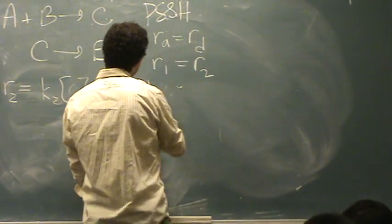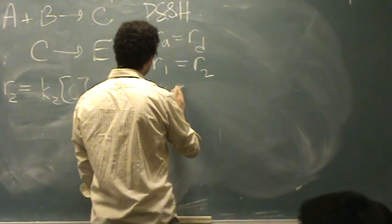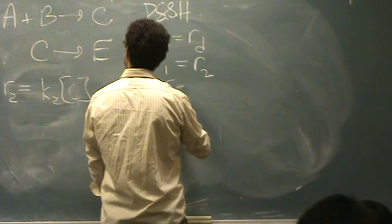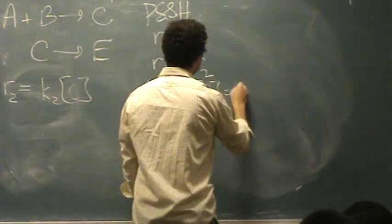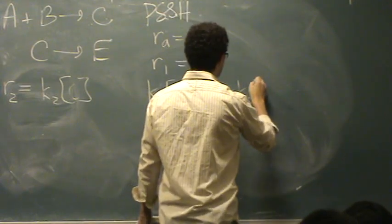So there's a couple ways you can do this one, I'll try this way. K1 times A times B equals K2 times C.